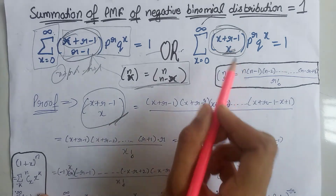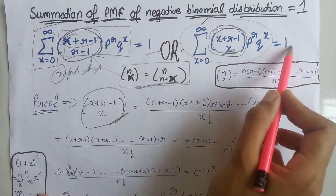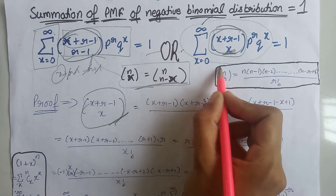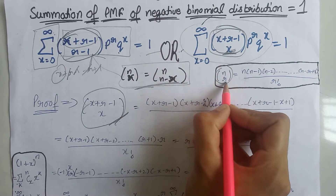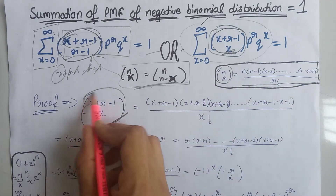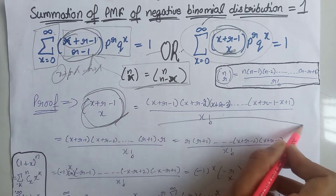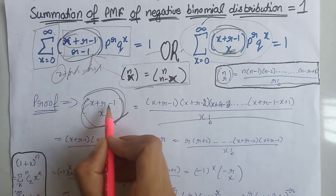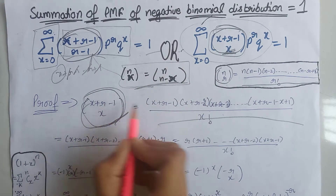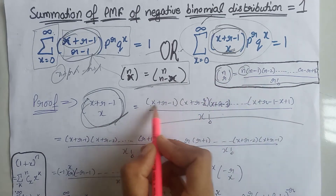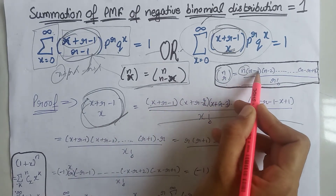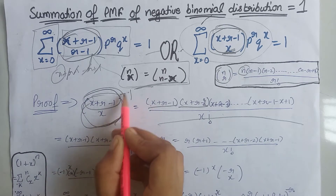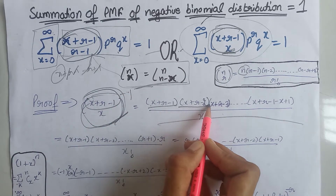We know that we can expand C(n, r) as shown. Similarly, we can expand this combination: at the place of n we have x plus r minus 1, so we first write x plus r minus 1, then n minus 1, which gives x plus r minus 2, and so on.